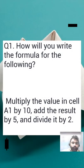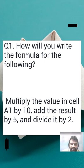How will you write the formula for the following in MS Excel sheet: multiply the value in cell A1 by 10, add the result by 5, and divide it by 2? This would be your first question.